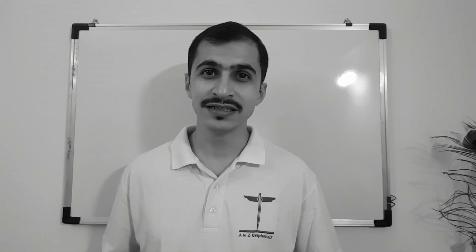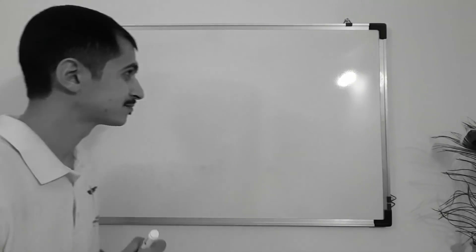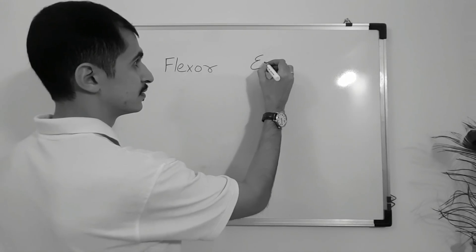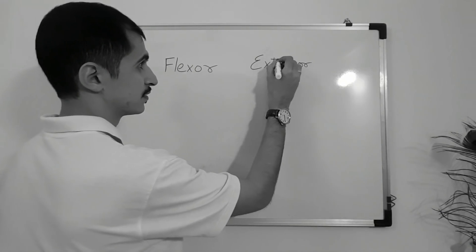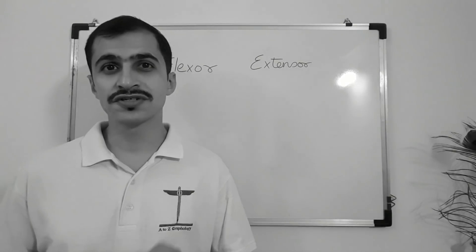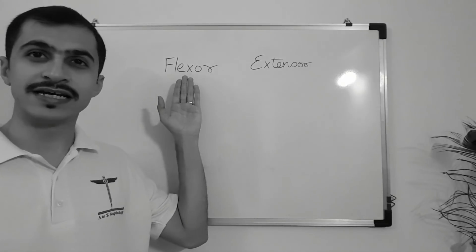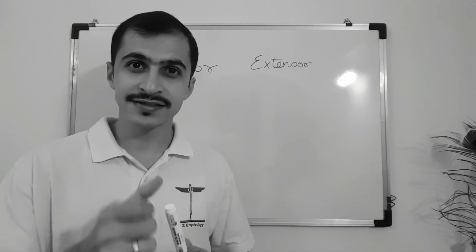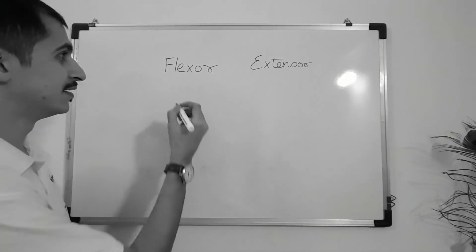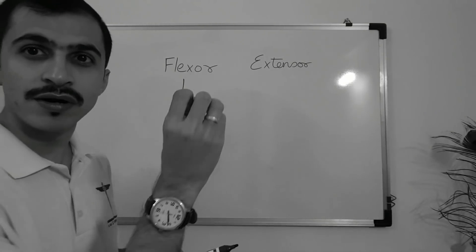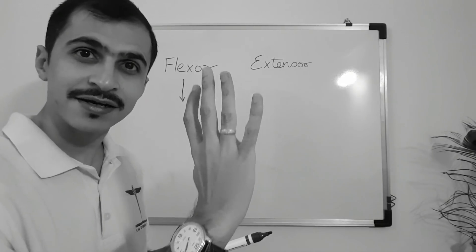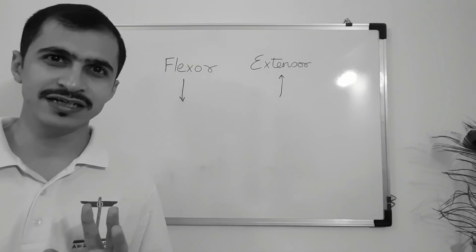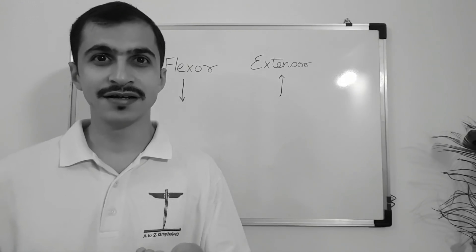There are two concepts in graphology and they depend on the stroke direction. These are two strokes found in graphology. One is called the flexor and the other one is called the extensor. Flex means to pull in. A flexor happens when I flex my muscle, which gives a downward stroke. When I extend my hand and fingers, I get an extensor stroke — a simple observation about which direction and which muscle represents the direction.